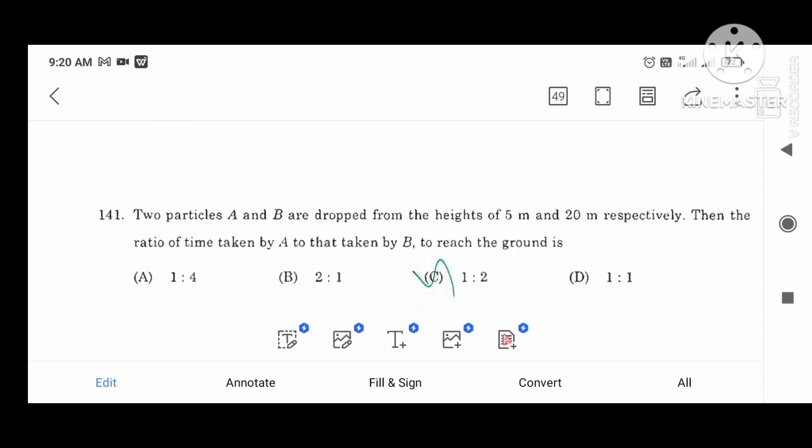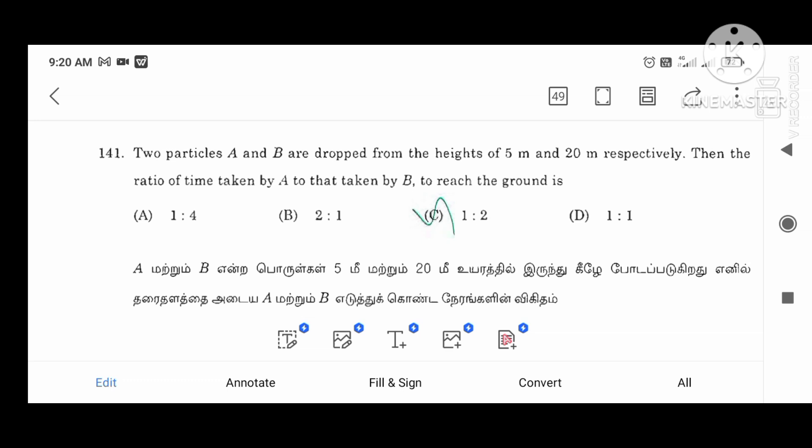The two particles of A and B are dropped from height 5m to 20m. The ratio is taken by the value. This is 1.1 is 2.